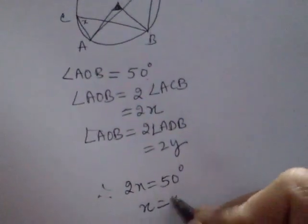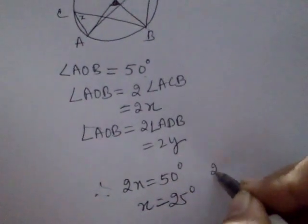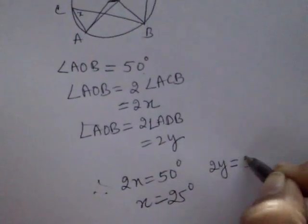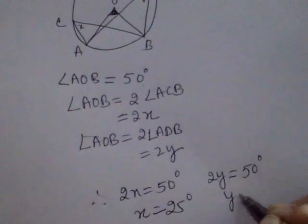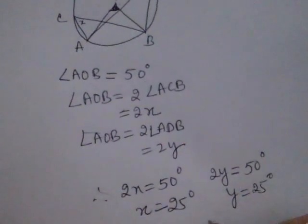So the value of X is 25 degrees. Similarly, 2Y is also 50 degrees, so Y is 25 degrees.